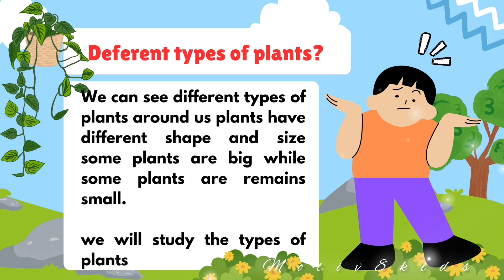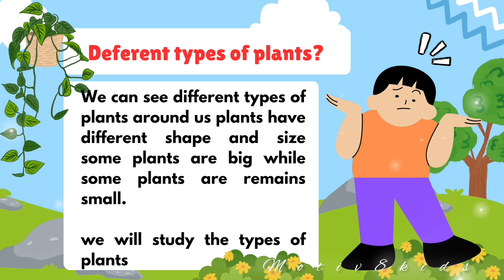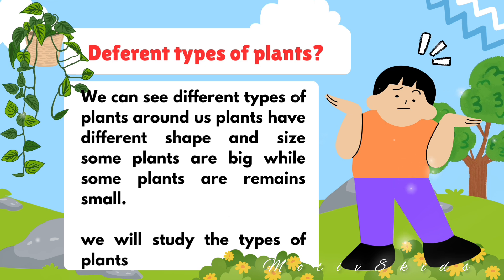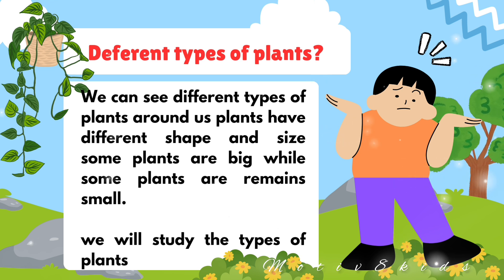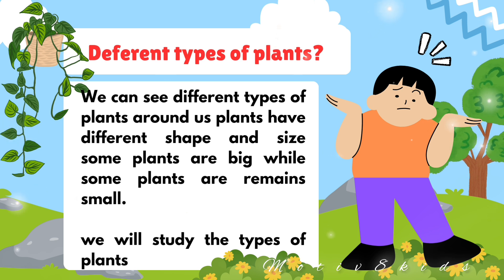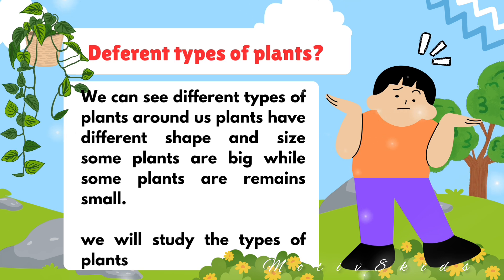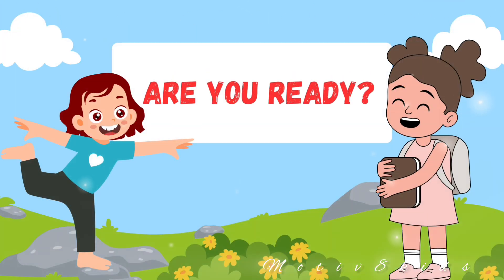We can see different types of plants around us. Plants have different shapes, sizes, and colors. Some plants are big while some plants remain small. All plants are not the same in size, color, or shape. Are you ready to learn more about the types of plants? Let's get started.